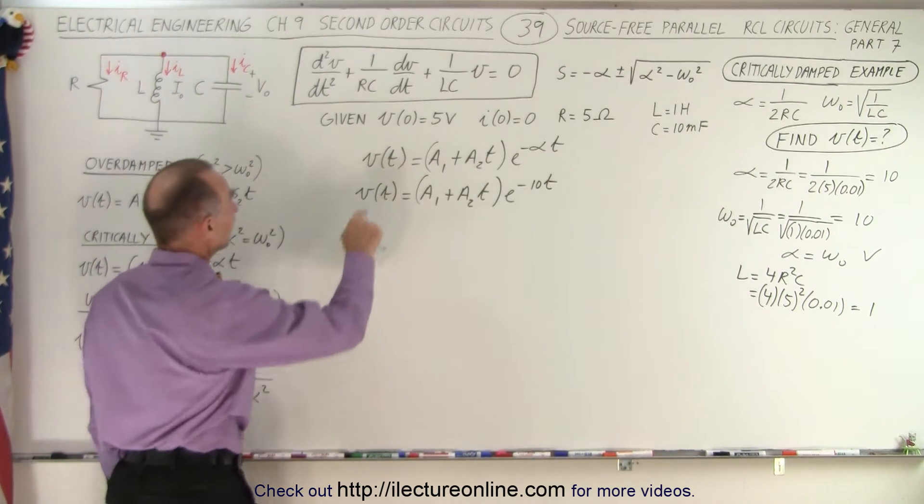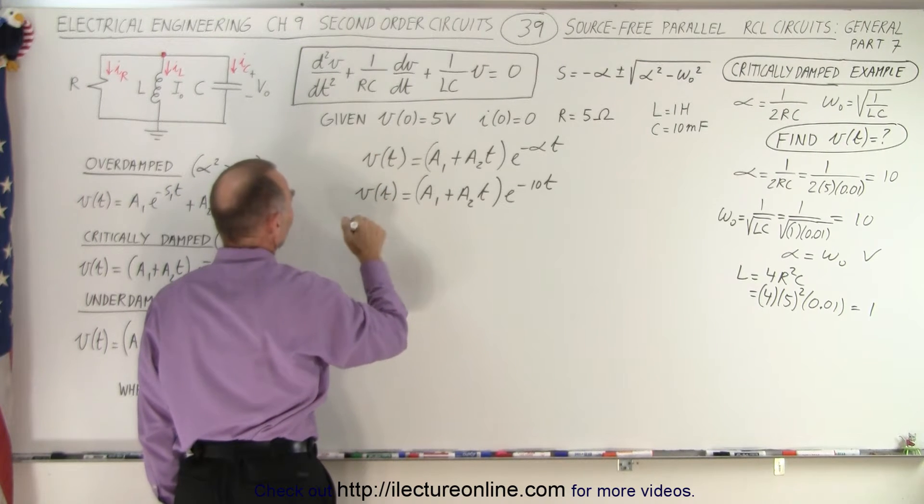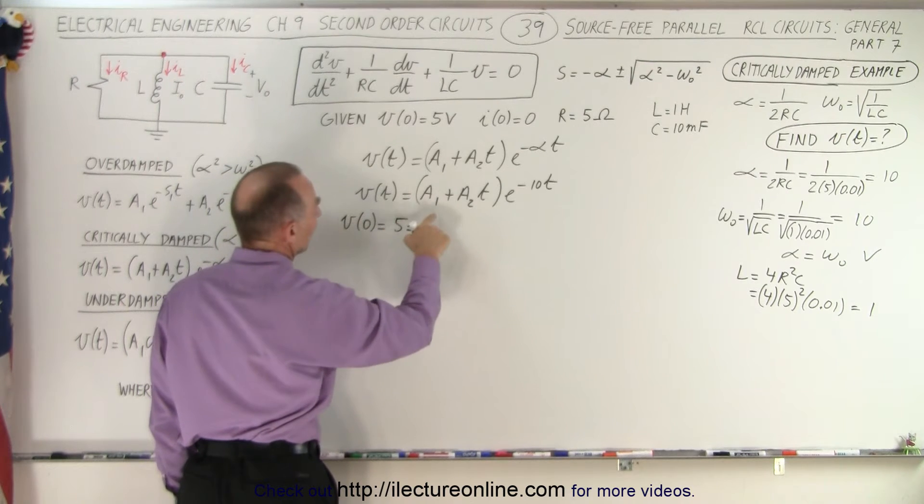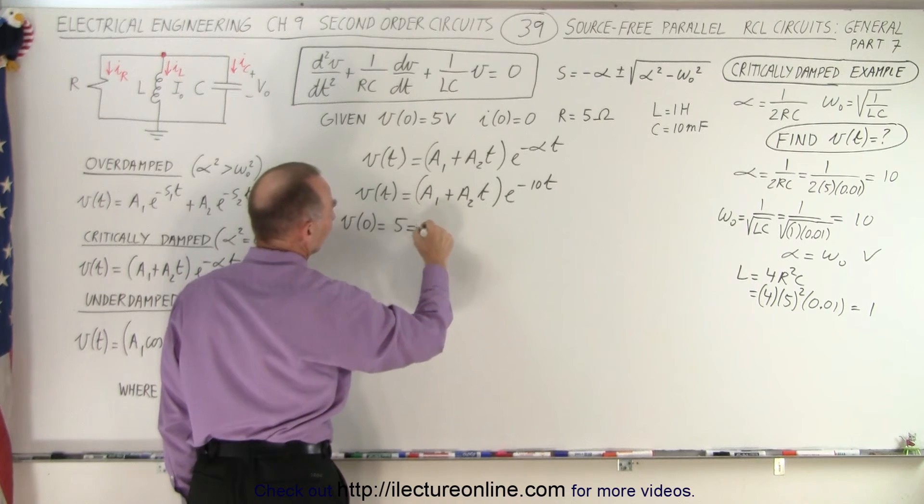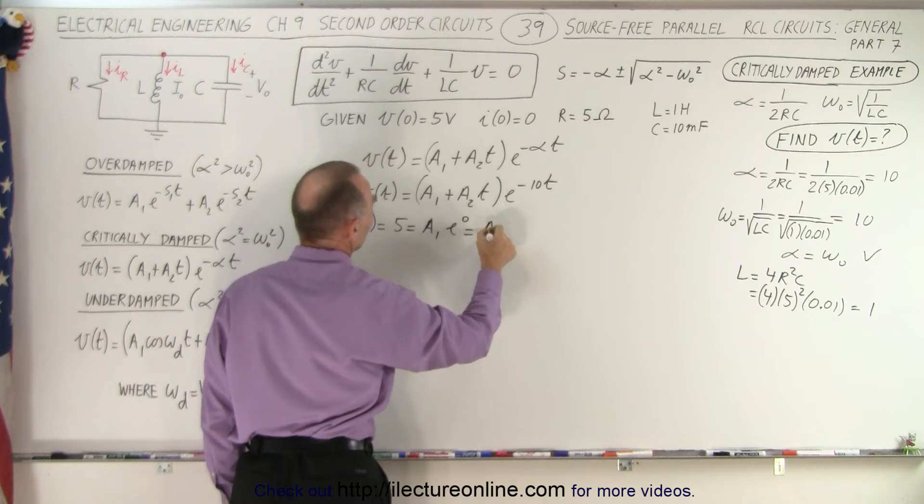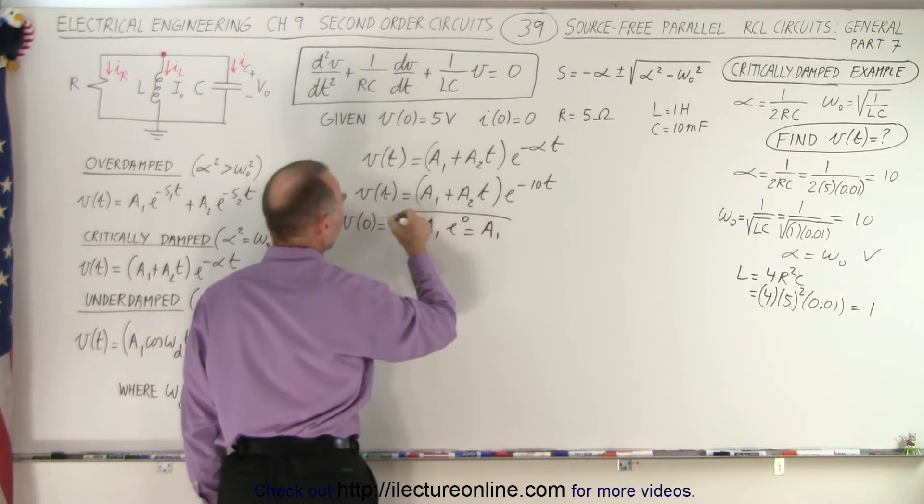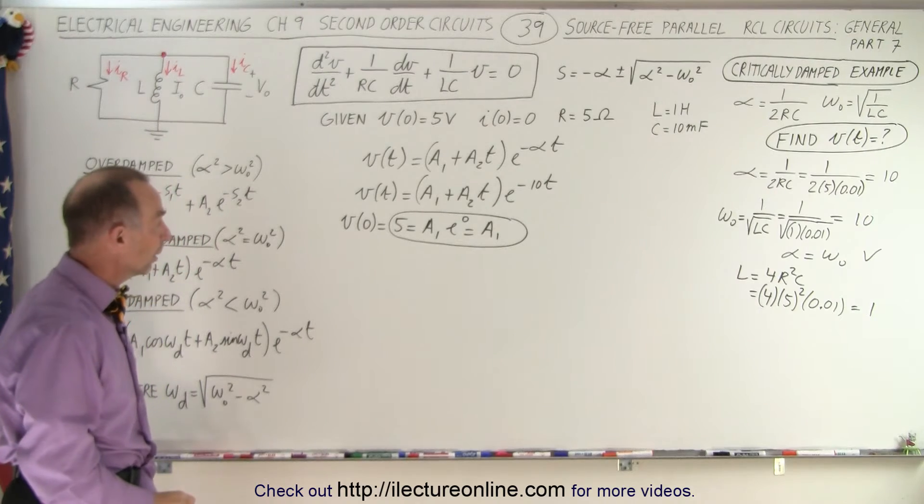Let's find the voltage when time is equal to 0 is equal to 5 so we have V when time is equal to 0 is equal to 5 now that would be equal to, notice that this will go to 0 so all we have left is A1 times E to the 0 which is equal to A1 which means that right away we already found the value for A1.